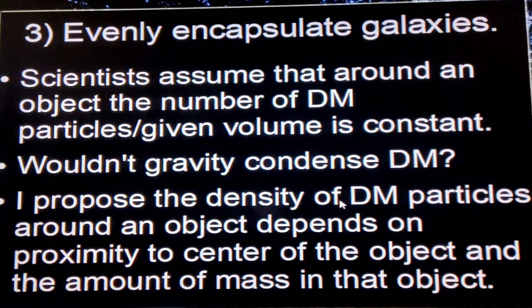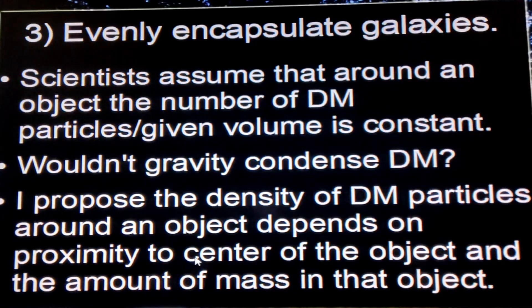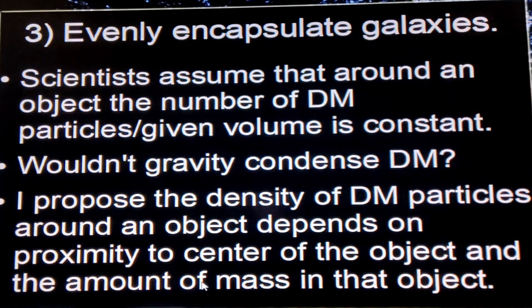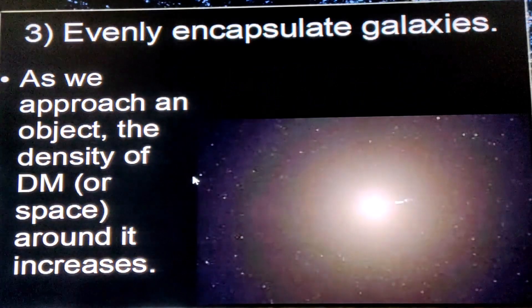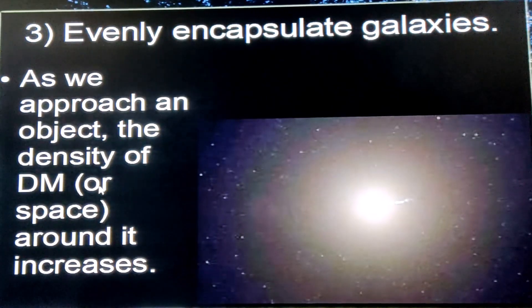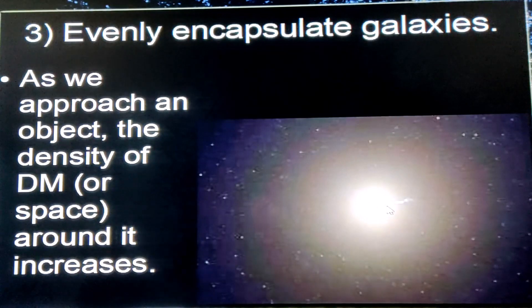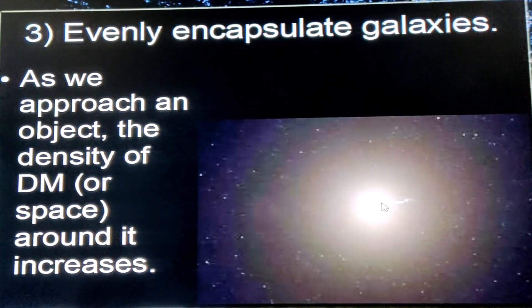But wouldn't gravity condense dark matter? I propose that the density of dark matter particles around an object depends on how close you are to the center of that object and how much mass it contains. As you approach a star, galaxy, or any massive object, the density of dark matter — or the density of space — increases. Out far away the density is very low, but closer in it increases because the gravity from the object is increasing.